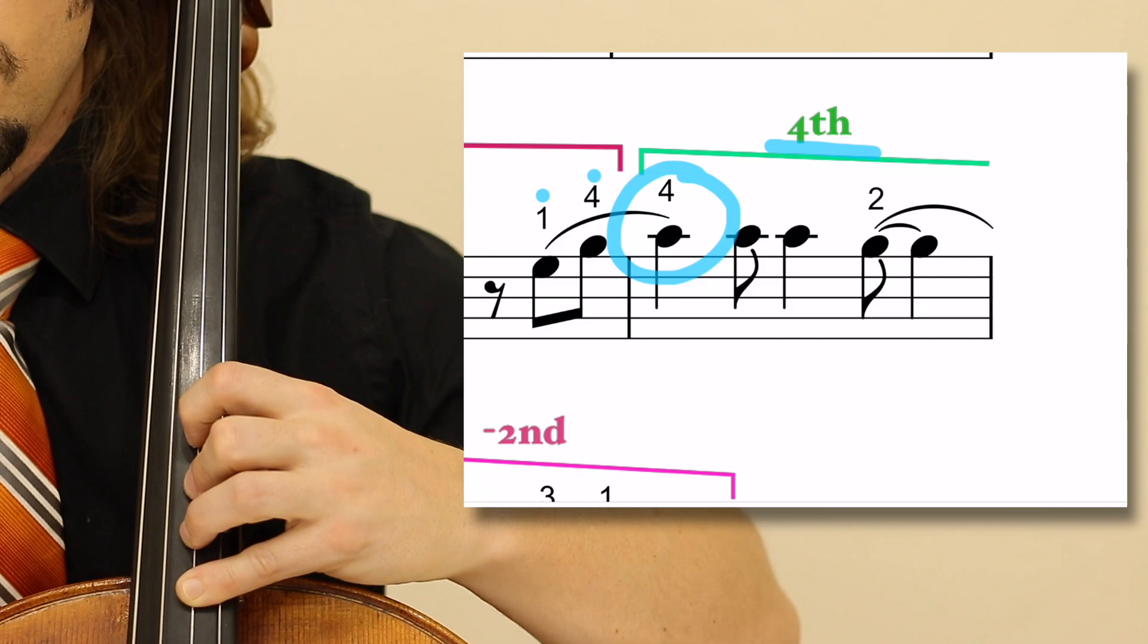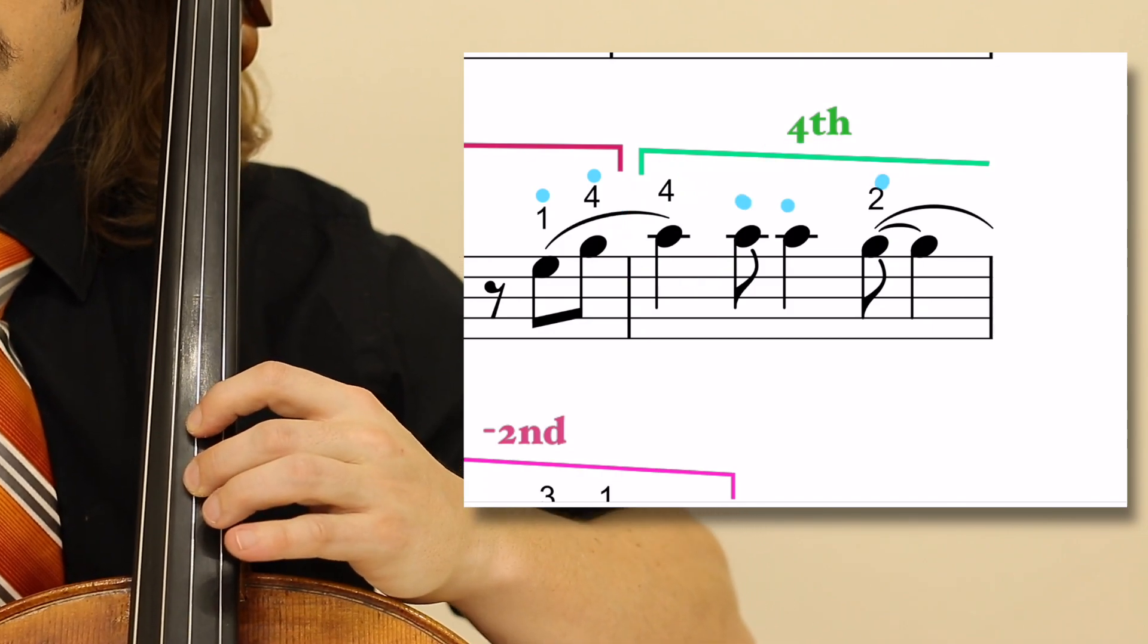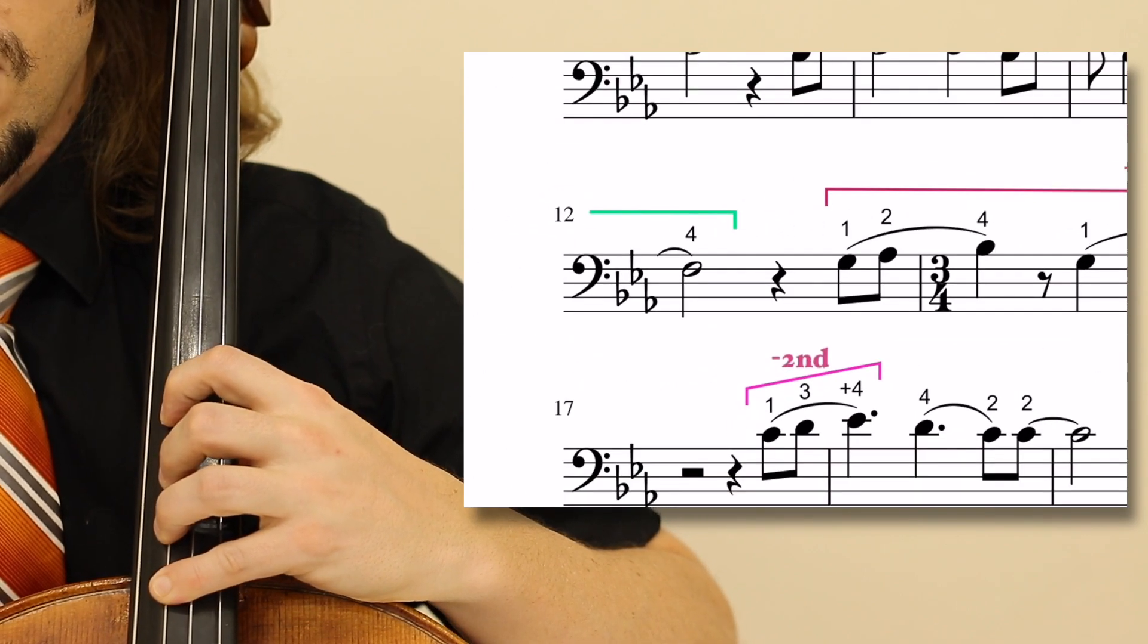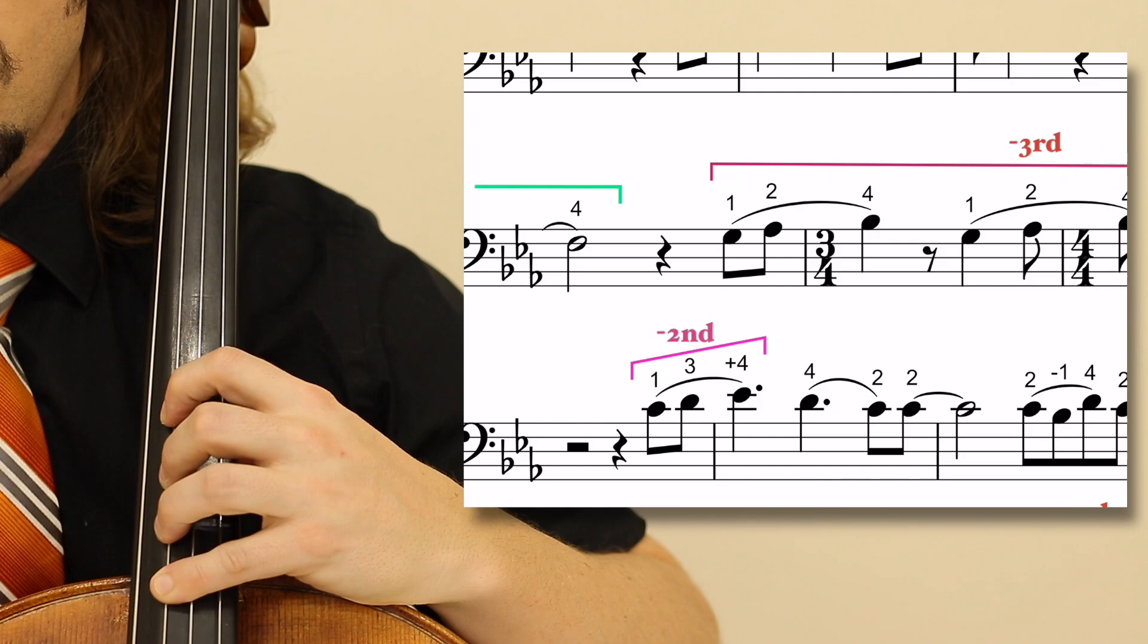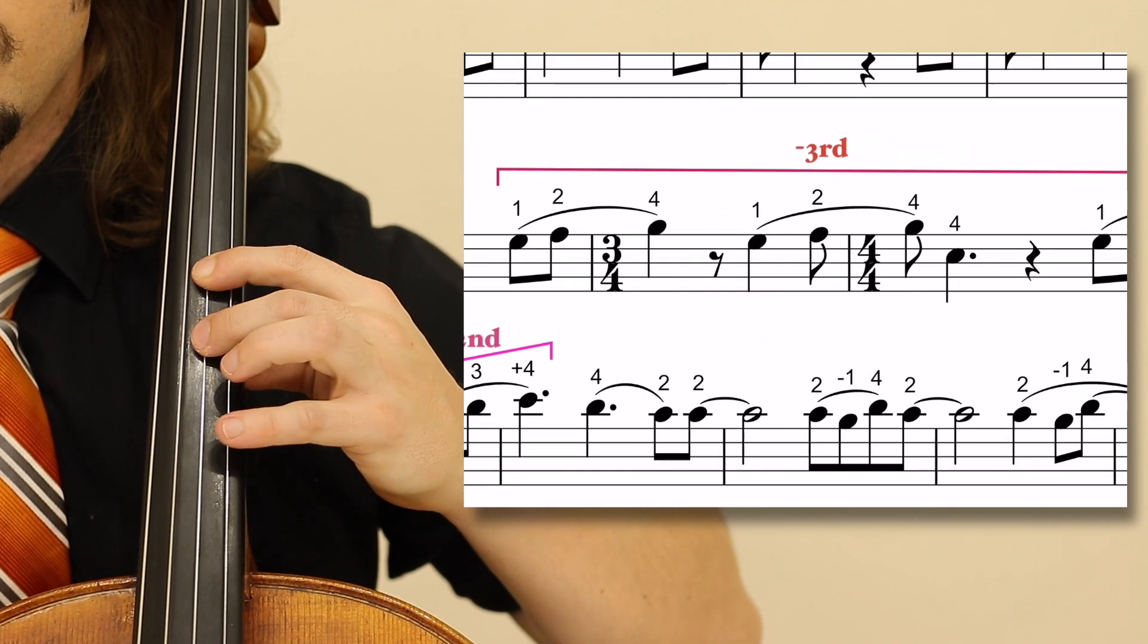We start here in the four, four, four, then a two on the B flat. That is measure 11. And measure 12, we begin here, four on the F natural on the G string. Continuing, it's one, two, four, one, two, four.